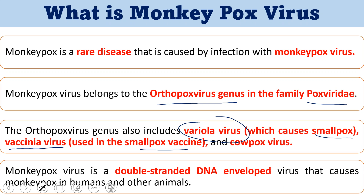The monkeypox virus is a double-stranded DNA enveloped virus causing monkeypox in humans and other animals. It is a zoonotic disease transmitted from non-human primates to humans, and also through close contact human-to-human via body fluids, saliva, serum, blood, or respiratory secretions. There are two different strains: the Congo strain with the highest fatality rate of roughly 10%, and the West African strain with a fatality rate of only 1%.